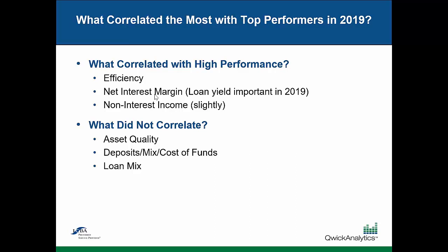Net interest margin was the second most highly correlated factor with performance in 2019 — loan yield was a big driver of that. Credit costs have been down, and banks that have been able to pass on higher loan yields have been able to generate margin and drive performance. Non-interest income is always a bit of a wild card. Banks with tremendous non-interest income generating franchises always have the ability to be high performing. Not all of us can participate in those specialized areas, but when you have a franchise — whether it be mortgage, wealth management, SBA lending, or trust management — when those are run well with highly qualified people, they can generate outsized performance.